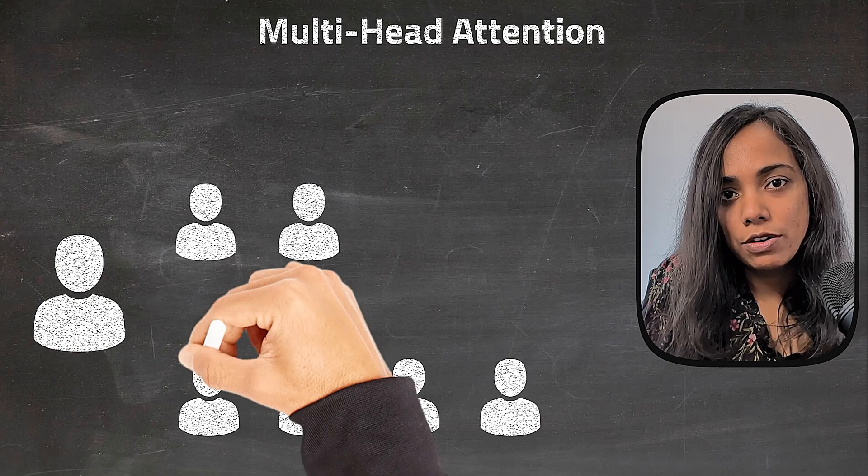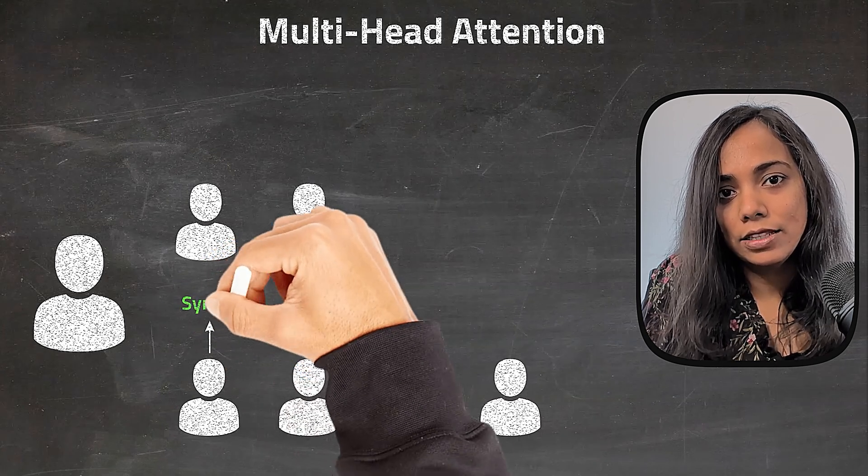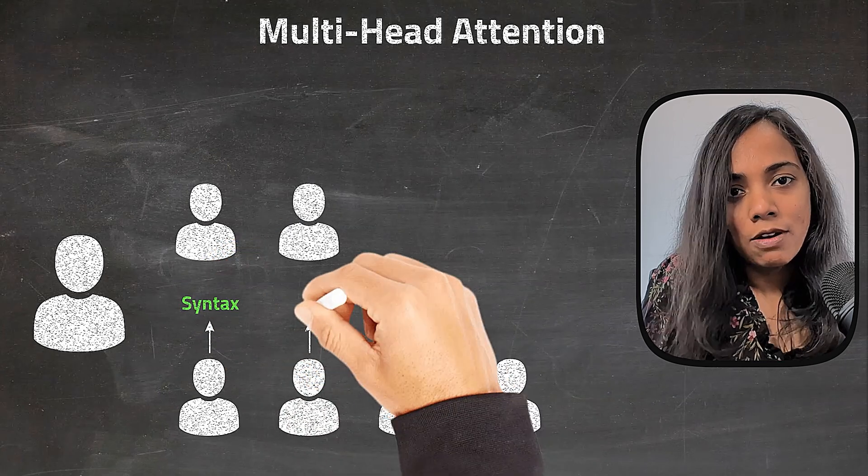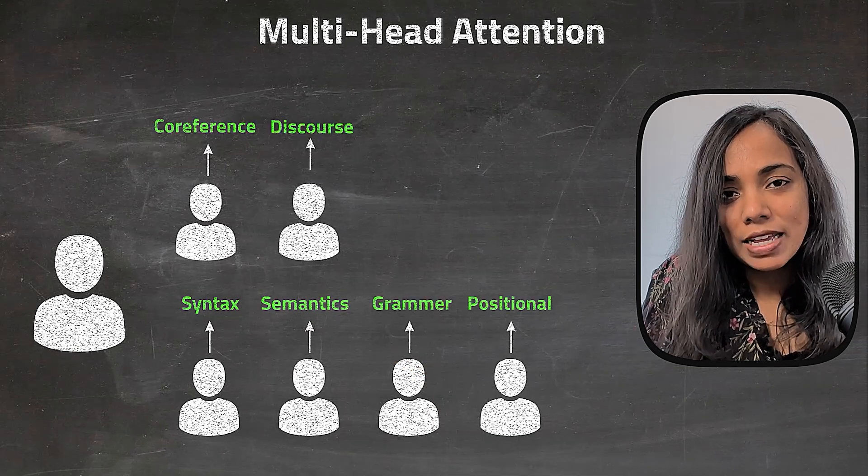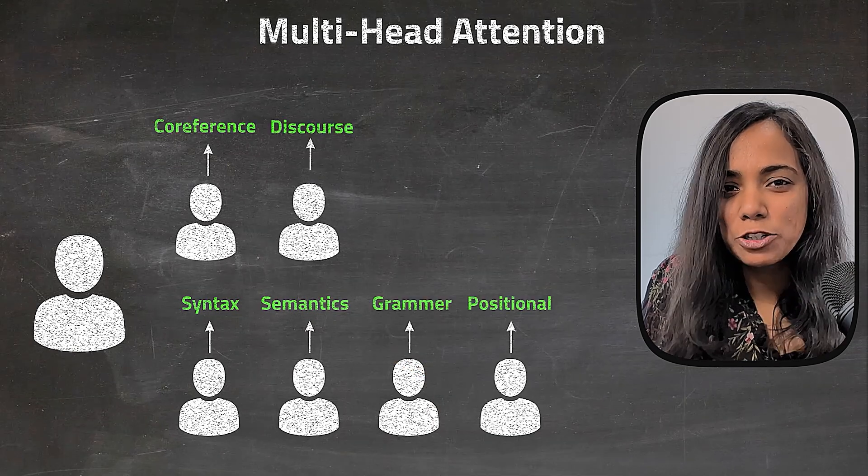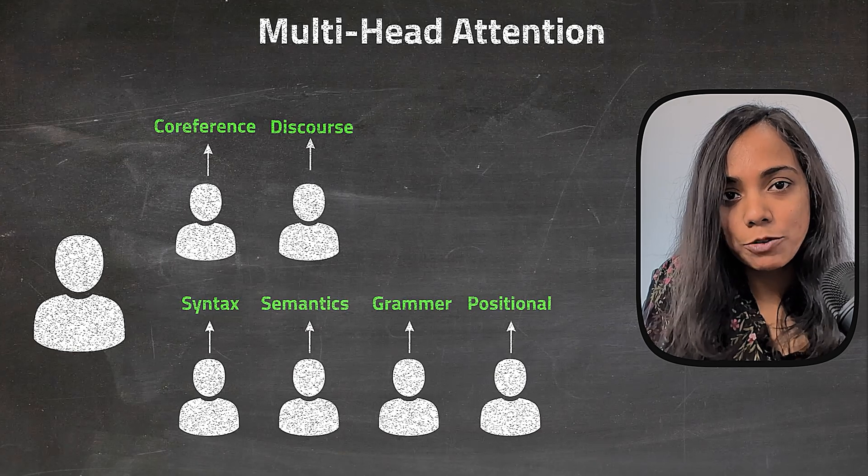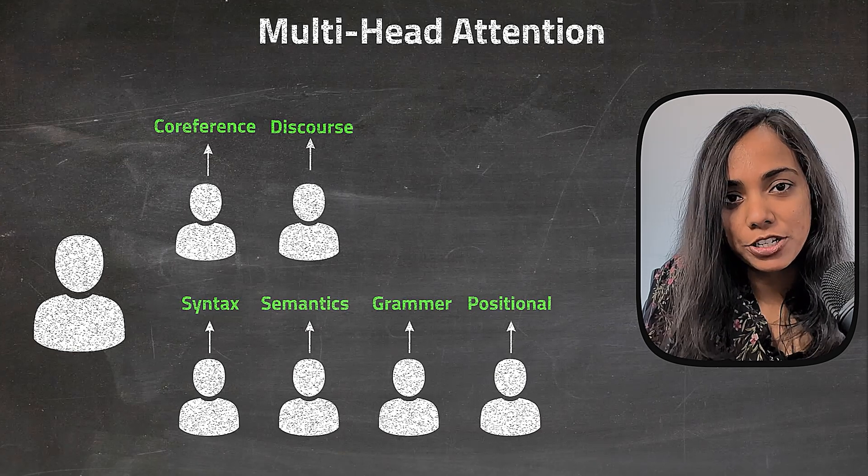The idea behind this helps the model to jointly attend to information from different perspectives or different representations of spaces at the same time, like one head will focus on syntax, another on semantics, or different types of relationships between words. A single attention mechanism might get dominated by one aspect, but different heads can capture a richer mix of information.